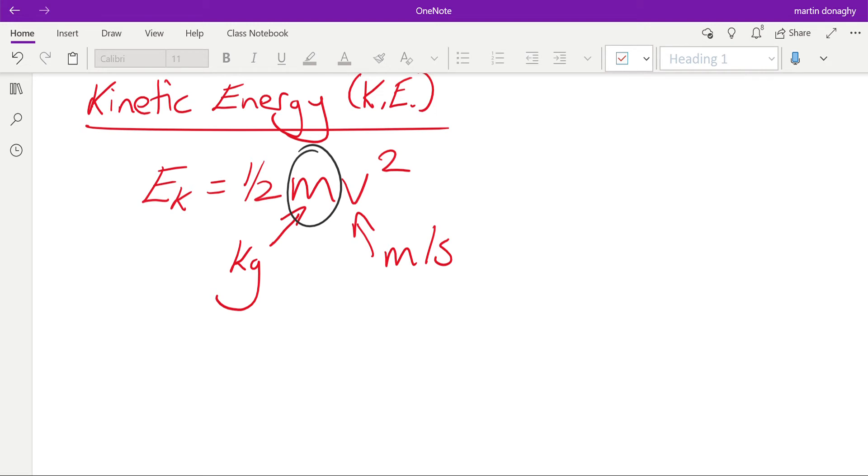Now the squared in this equation makes it interesting, because it means if I double the velocity, the kinetic energy doesn't double. It actually increases by two squared, which is four times. So if the car's traveling twice as fast, it actually has four times as much energy.